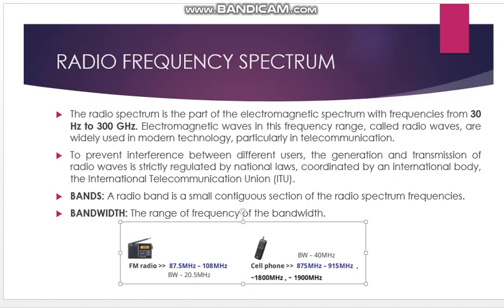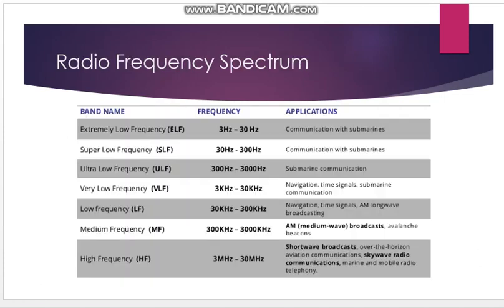In FM radio, the frequency varies between 87.5 MHz to 108 MHz, and the bandwidth — subtracting these two — is 20.5 MHz. The bandwidth of a cell phone is 40 MHz, and it also relies on radio frequency. There are different types of frequency spectrums and frequency allocations related to different technologies: GSM, 3G, 4G technology — they are also related to this. The cell phone uses 40 MHz bandwidth.